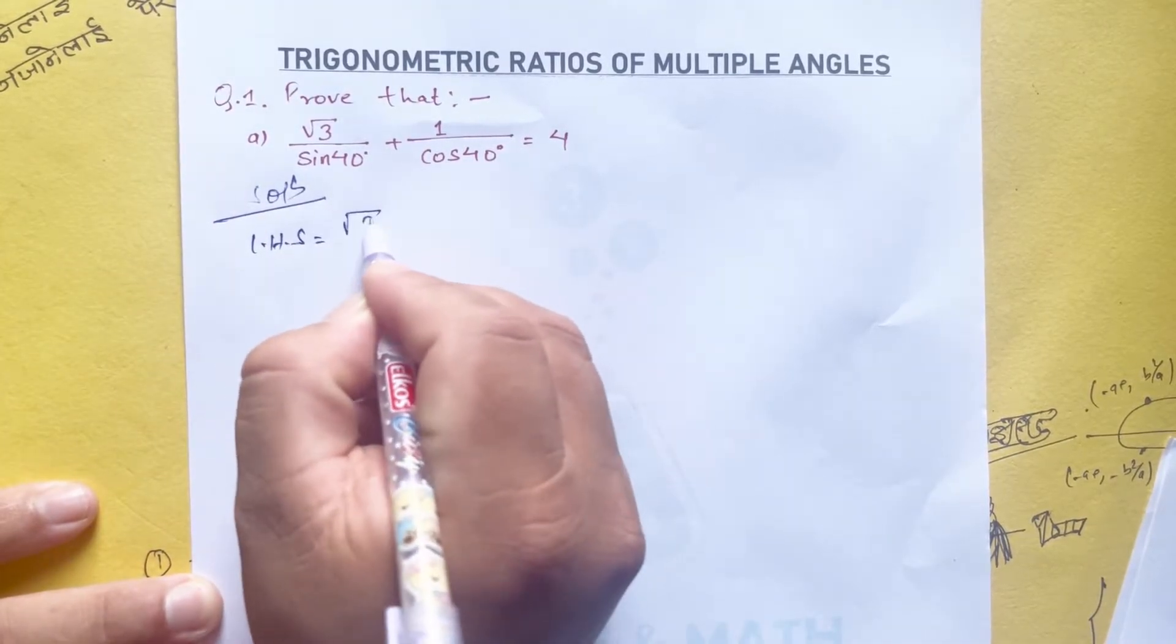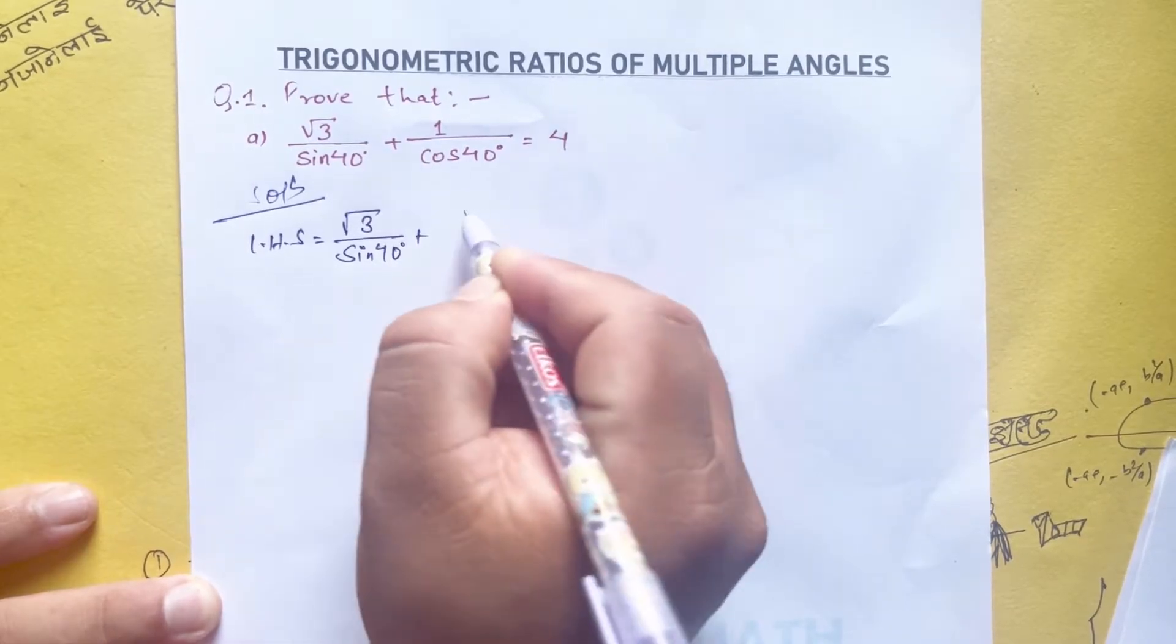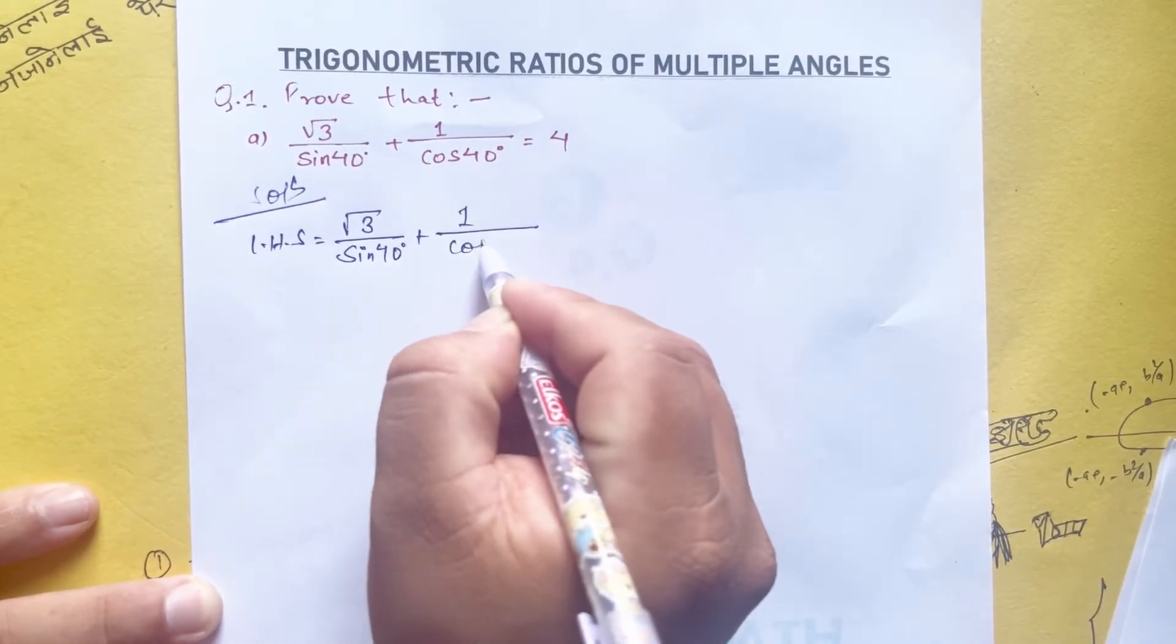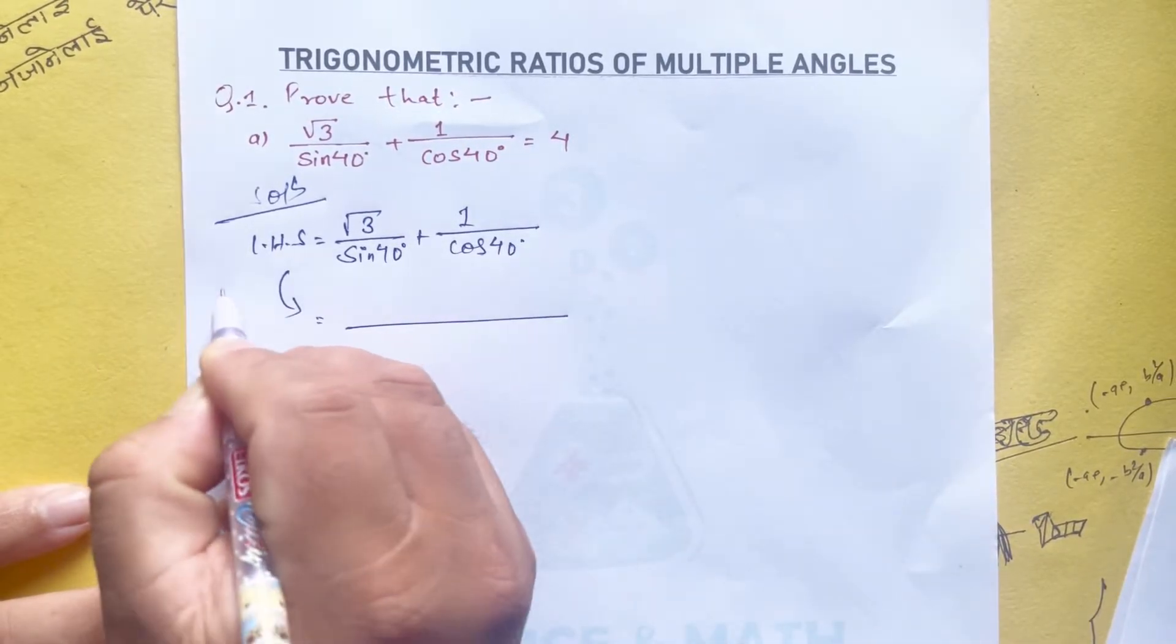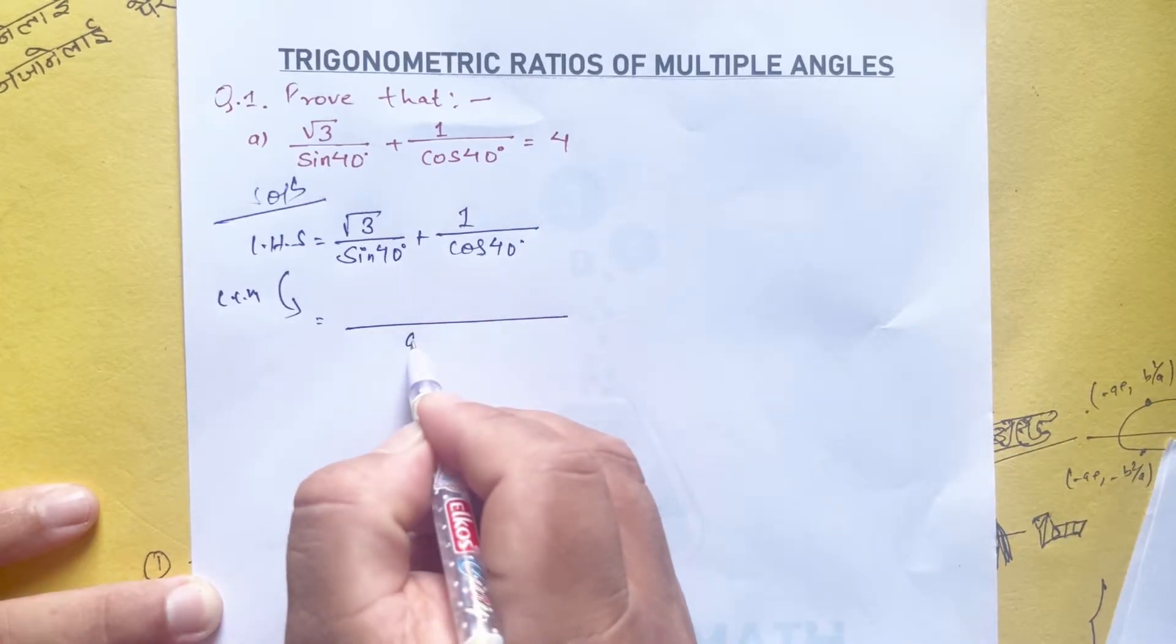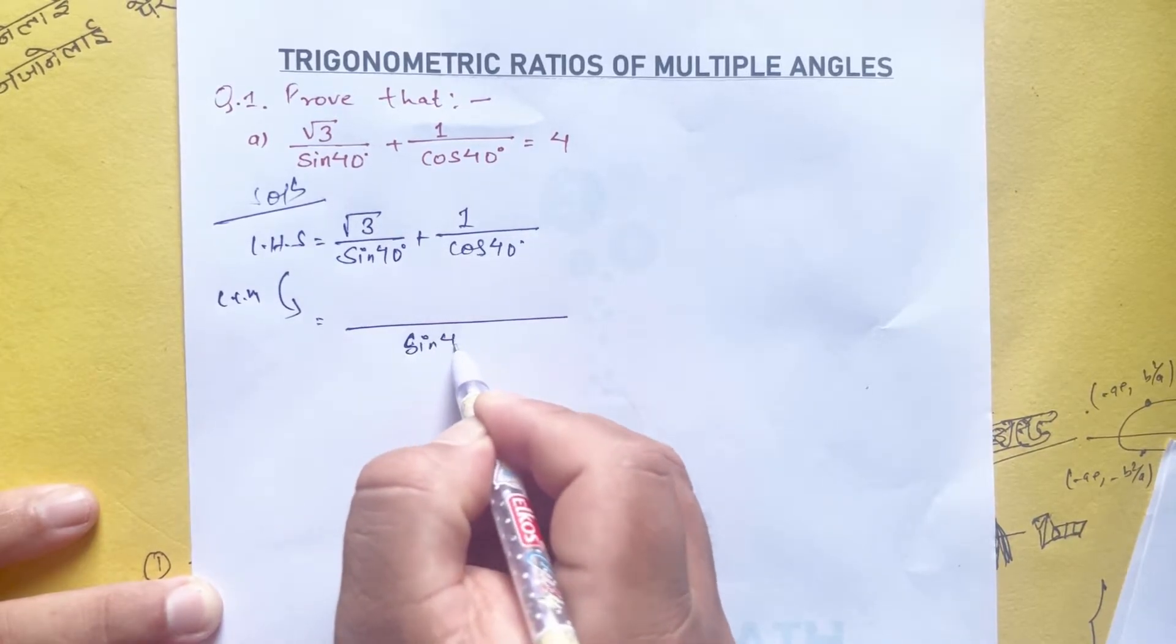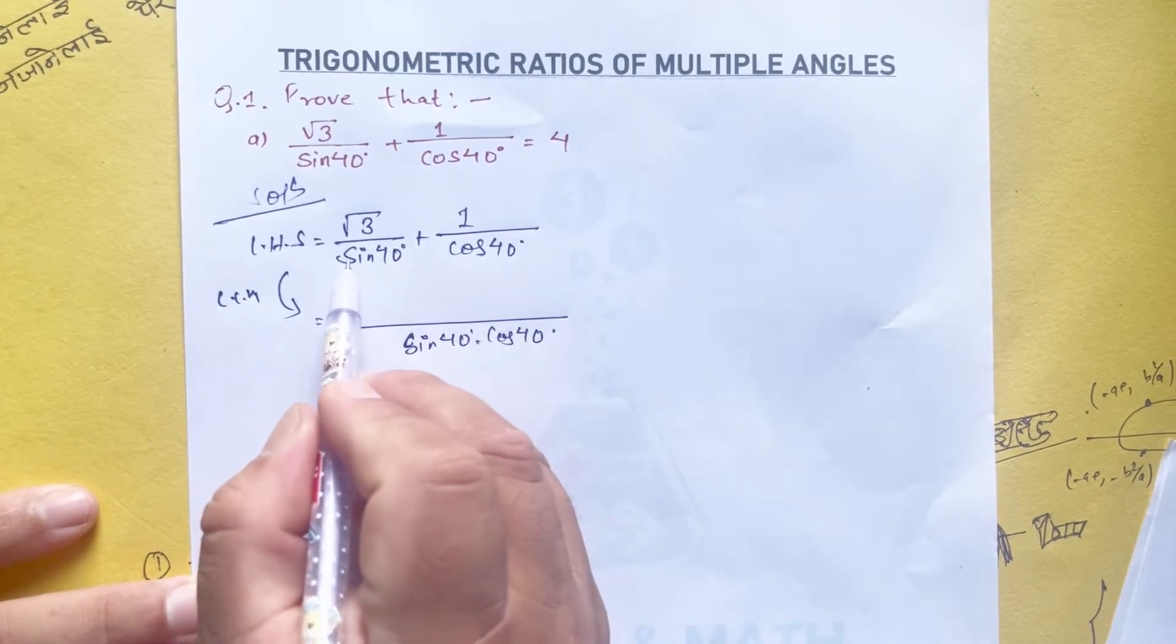√3 divided by sin 40 degree plus 1 upon cos 40 degree. Taking LCM of sin 40 and cos 40, we get sin 40 cos 40 in the denominator.